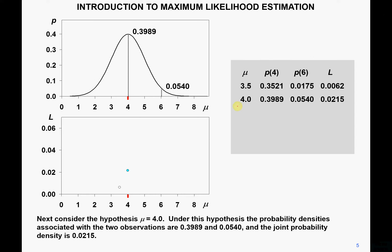Now let's change the parameter mu. If we assume a normal distribution with mu equals 4 and standard deviation 1, we get new probability densities for 4 and 6. The new joint probability density is 0.0215, compared to 0.0062 previously — it is increasing as we change our hypothesis.